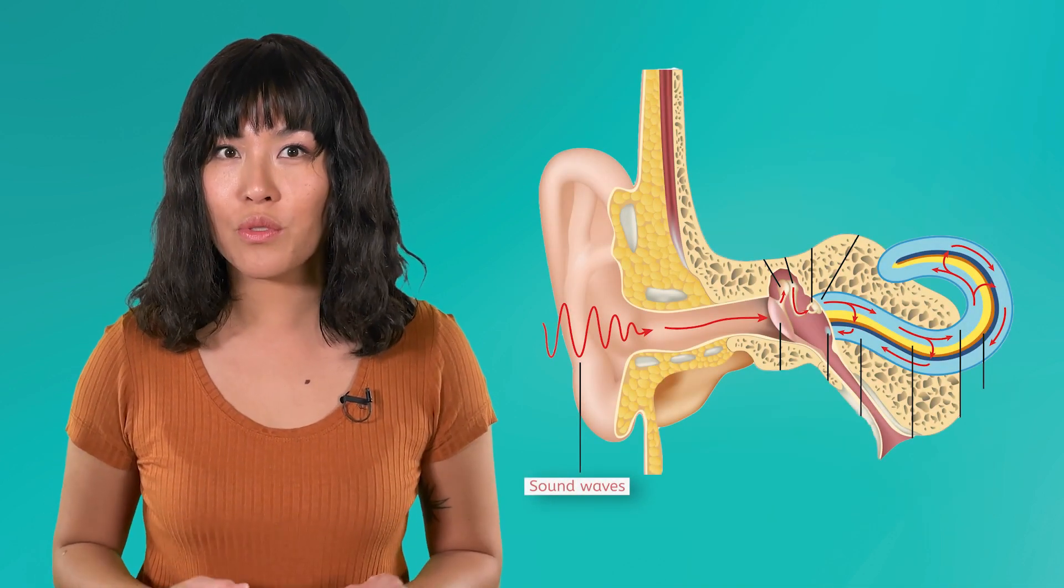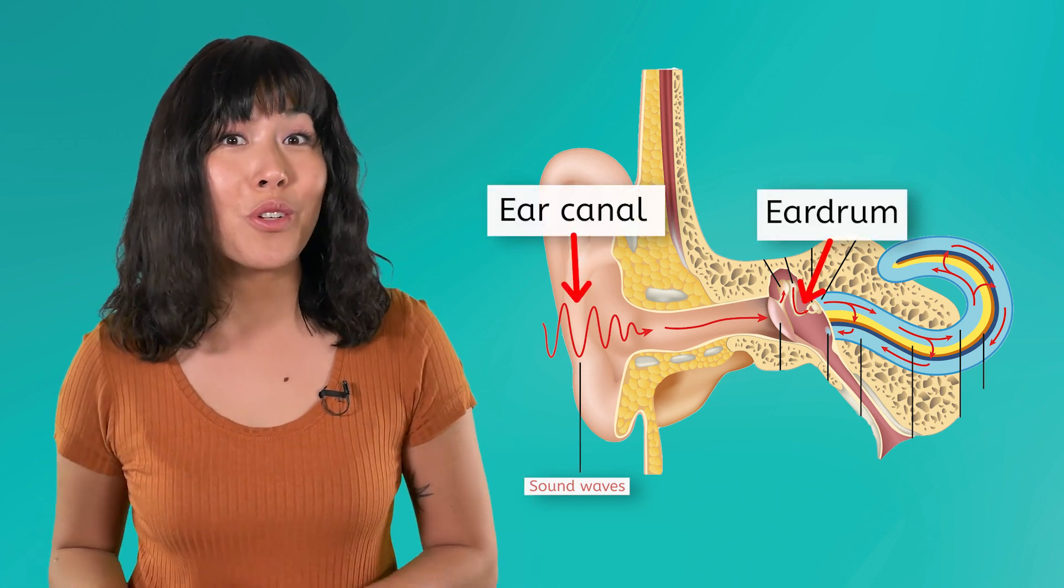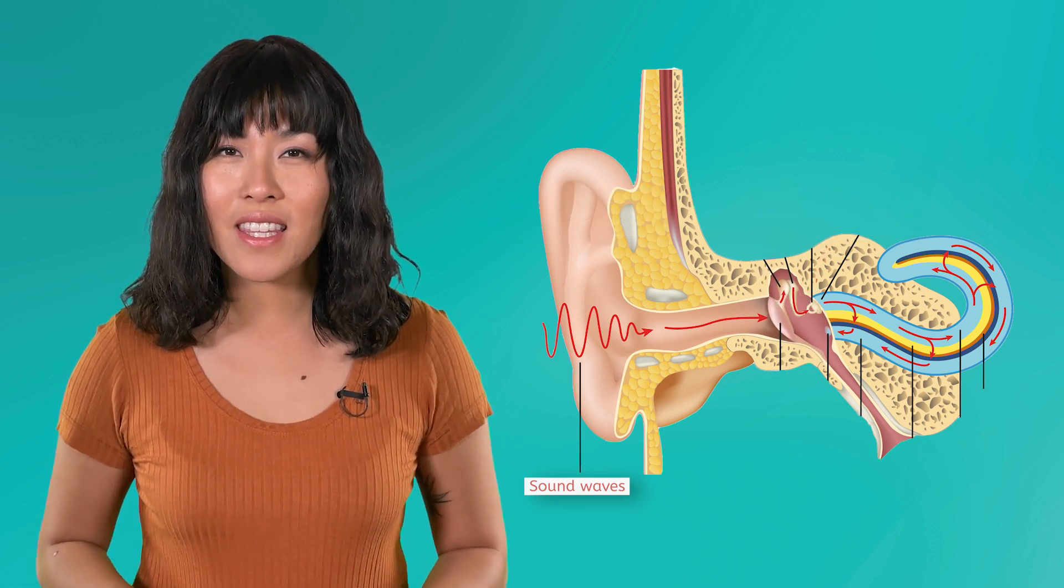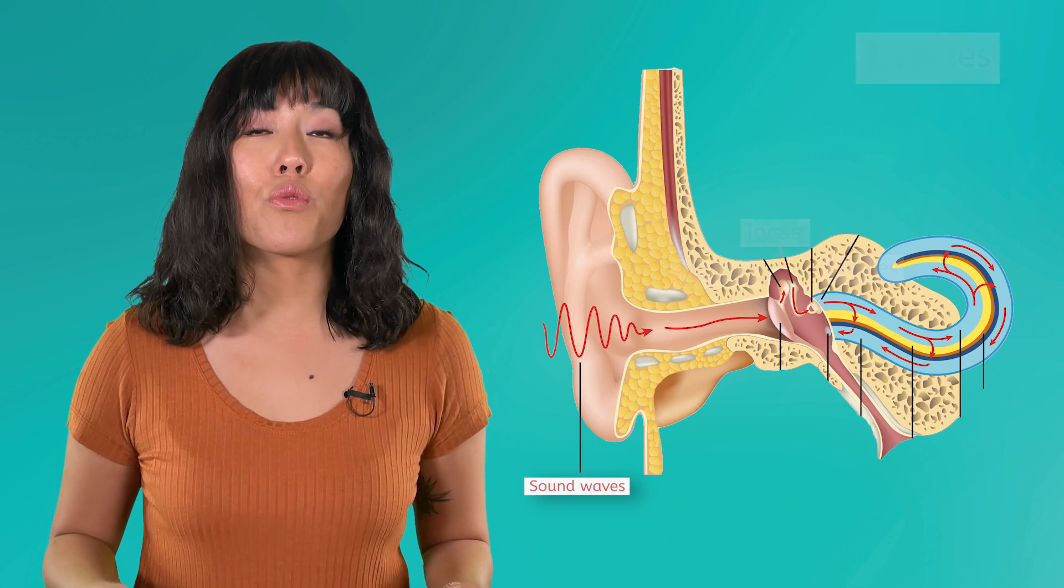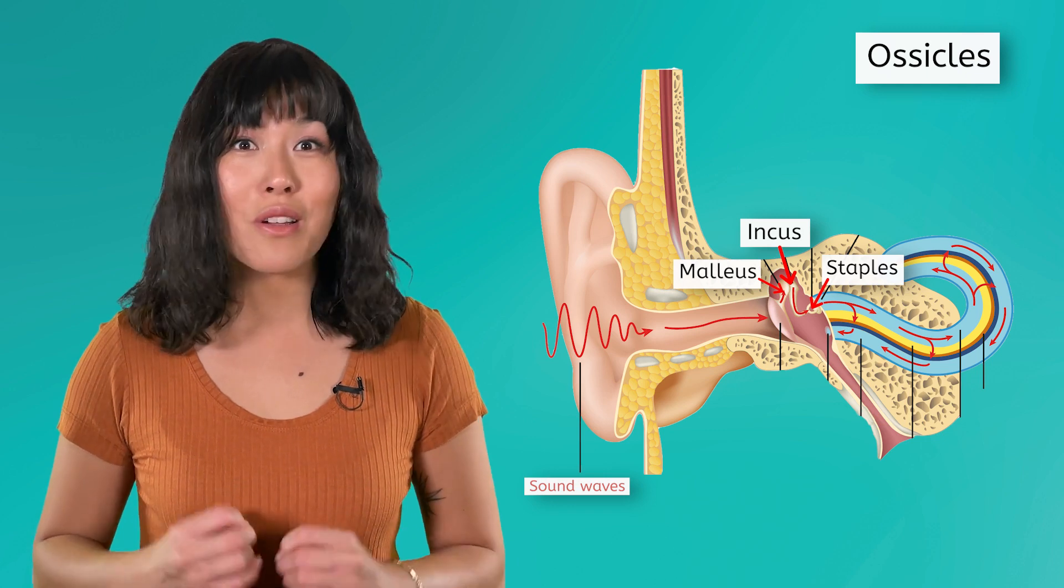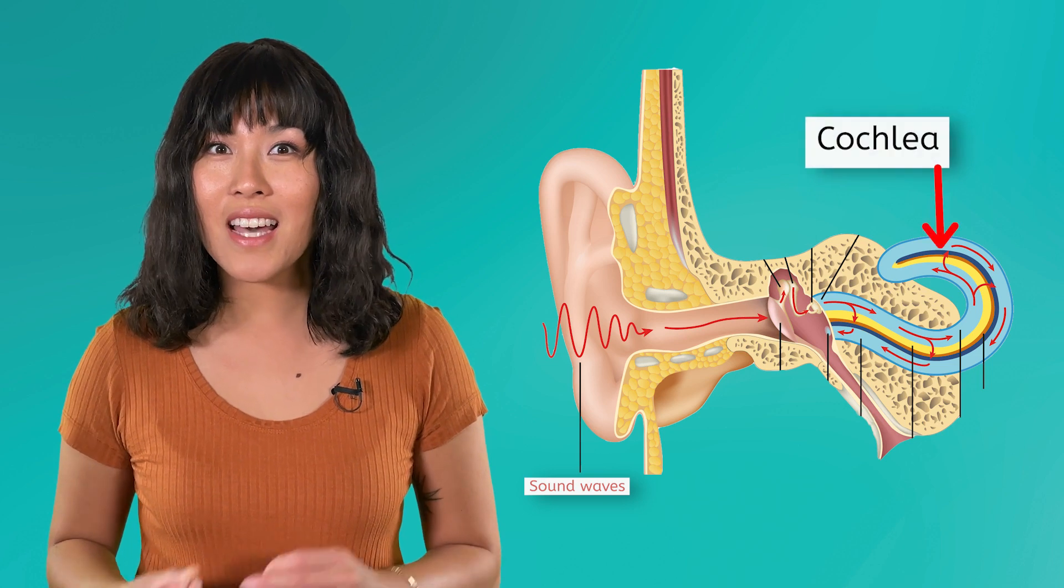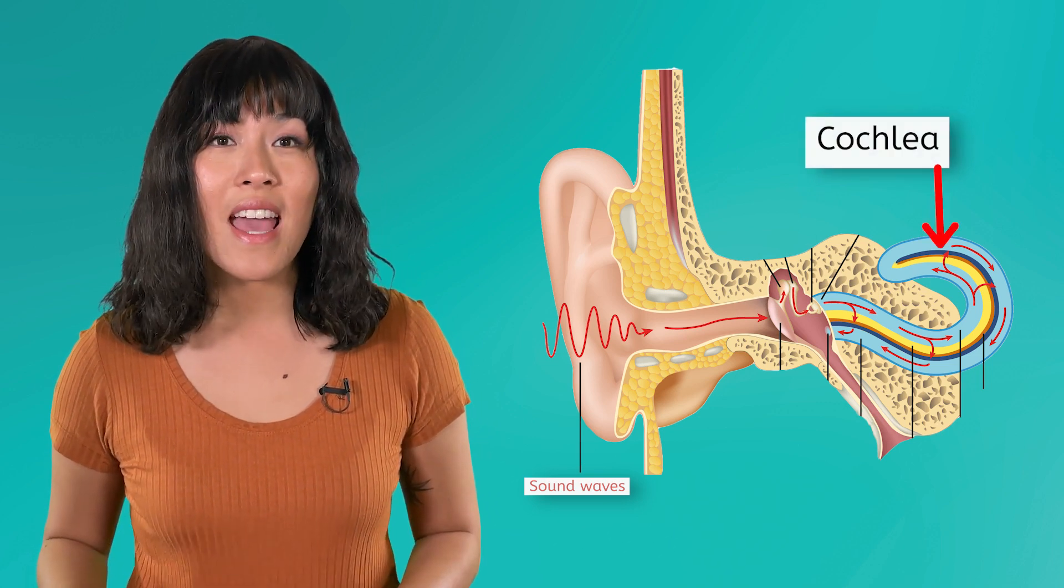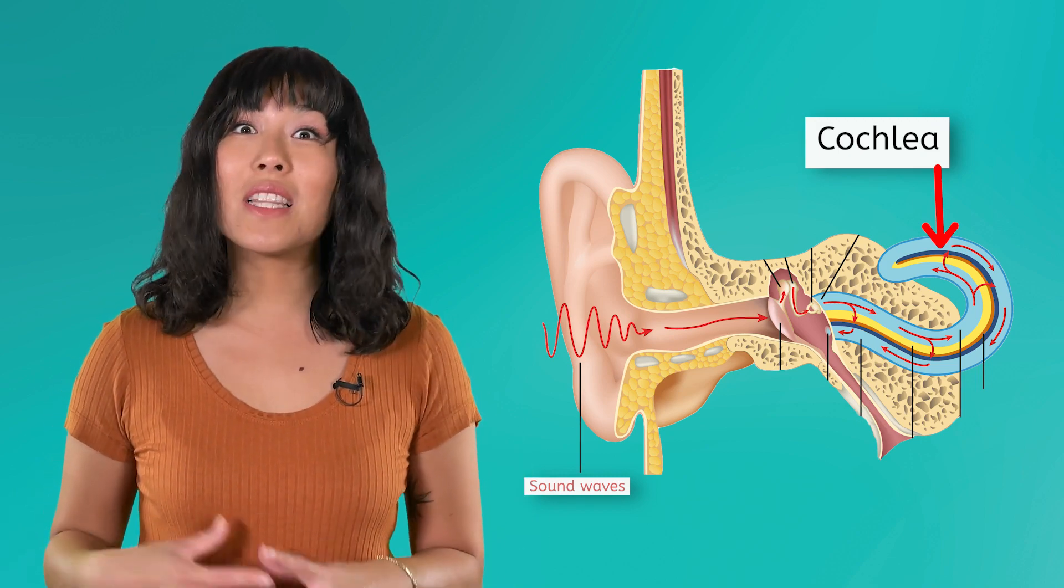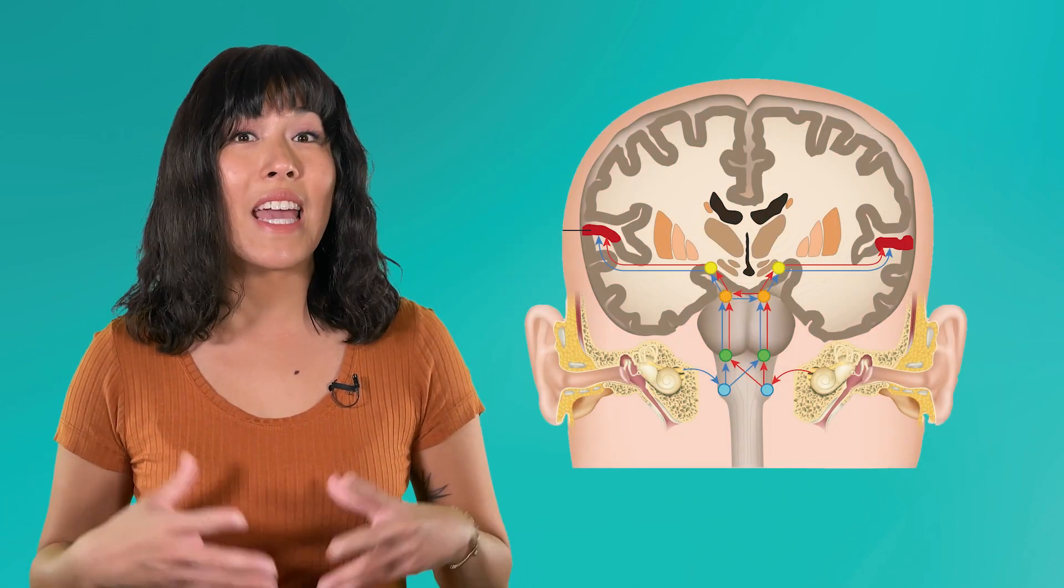When these pressurized air molecules reach your ear, they're funneled through your ear canal to your eardrum, which acts like a drum skin, vibrating with each ripple that hits it. These vibrations are then passed through three tiny bones in your ear, known as the ossicles. These are the smallest bones in your body. These amplify the sound like a mini speaker onto the cochlea, a snail-shaped organ filled with fluid and tiny hair cells that dance with the vibrations, turning them into electrical signals.